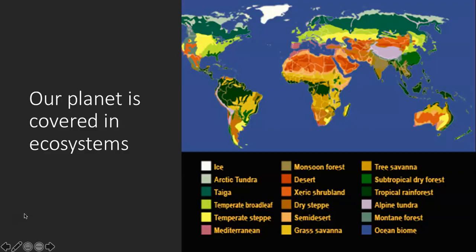When we look at our planet, we notice that it's covered in different ecosystems. We know that an ecosystem is different because the temperature, the weather, and the climate is different, but also the things that live there are different. The organisms that live there are well adapted to their environment, but may not be adapted to other environments.